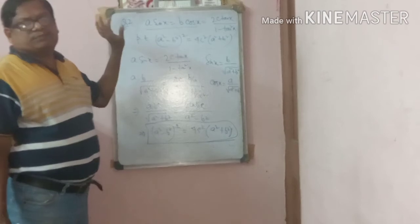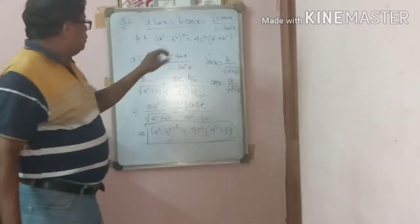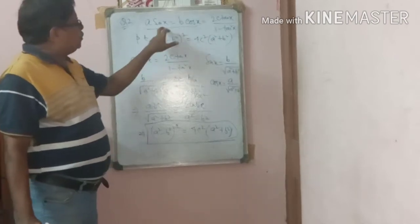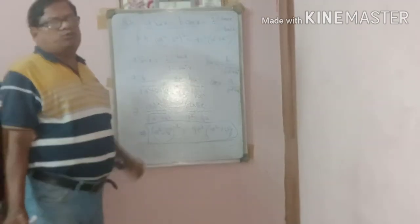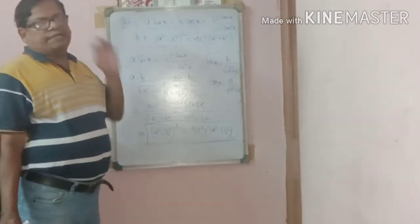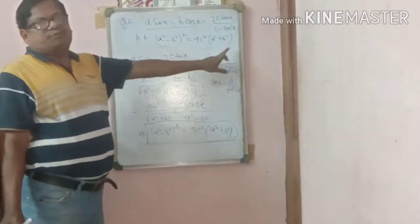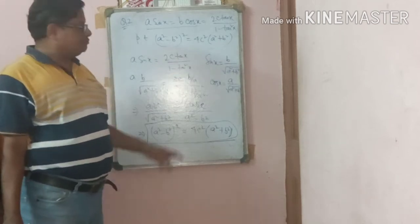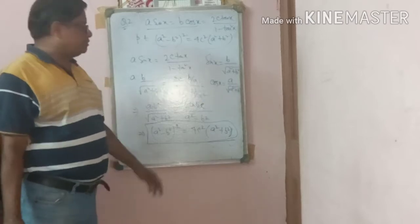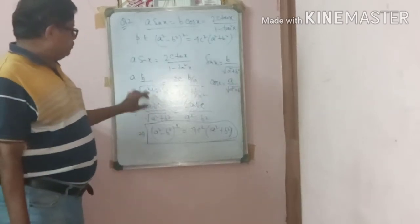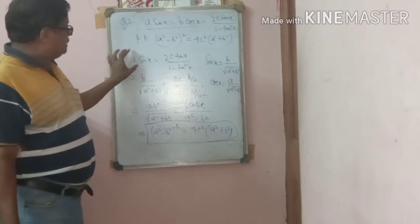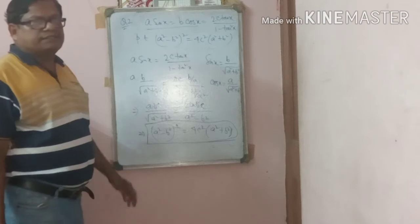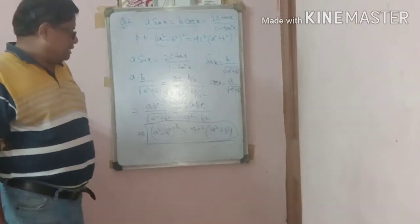So to summarize: from a·sinx = b·cosx we get tanx = b/a, then sinx = b/√(a²+b²) and cosx = a/√(a²+b²). Putting these values into the given relation a·sinx = 2c·tanx/(1 − tan²x) and simplifying, we obtain (a² − b²)² = 4c²(a² + b²).